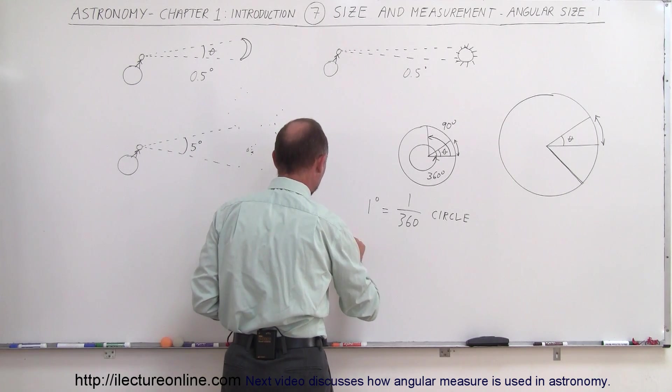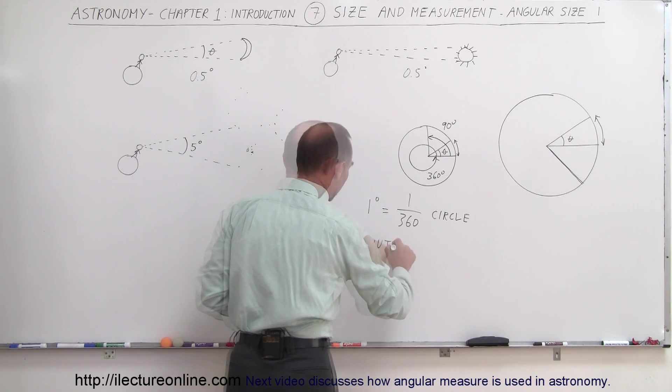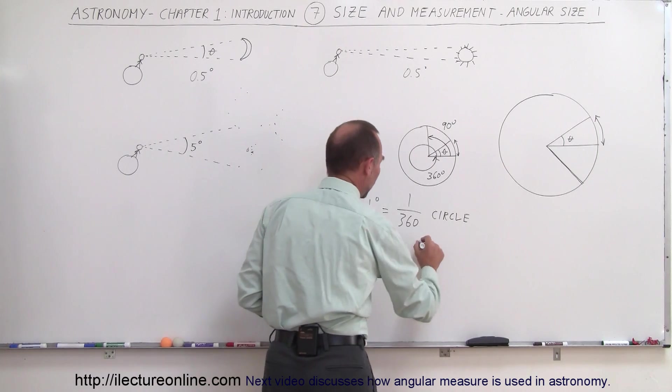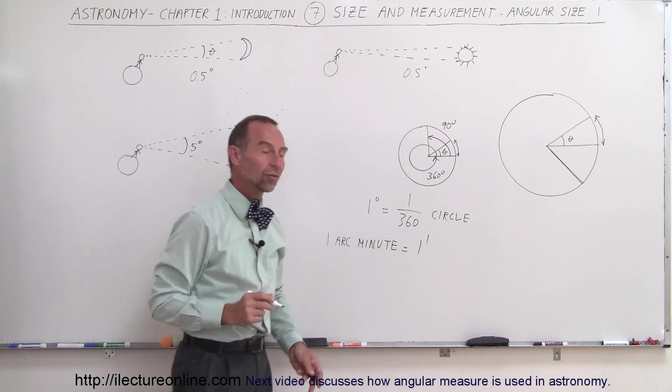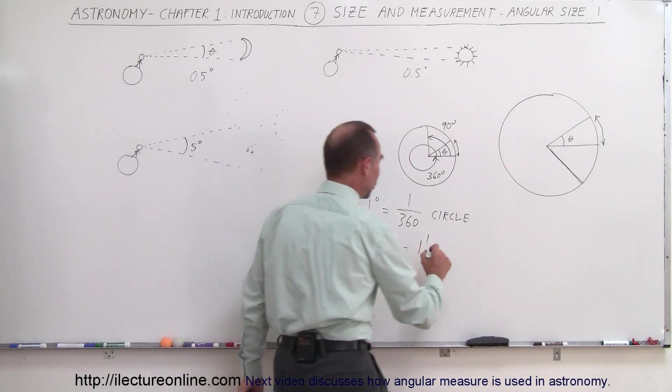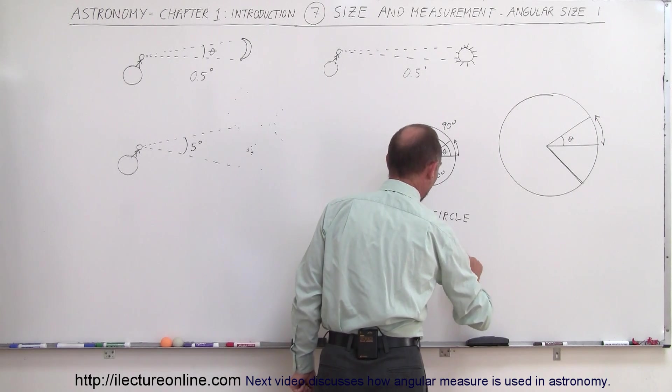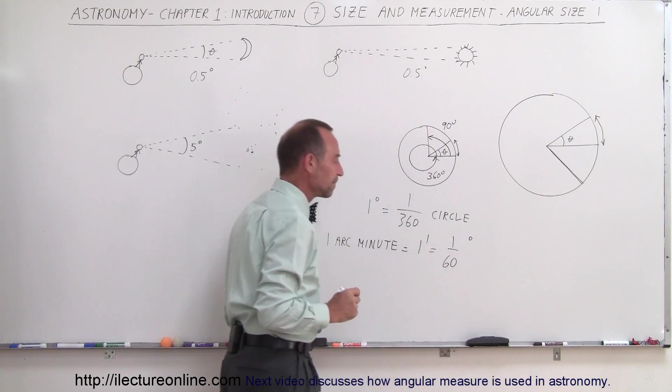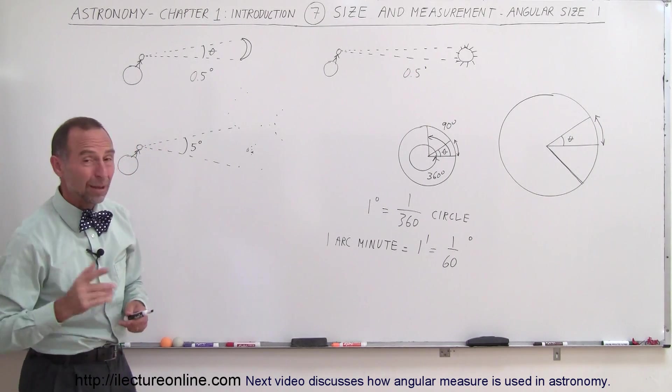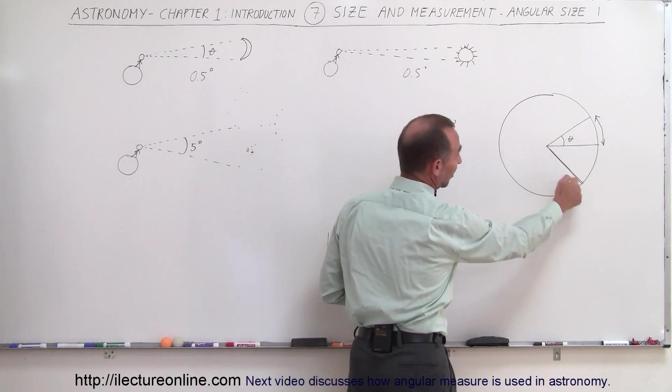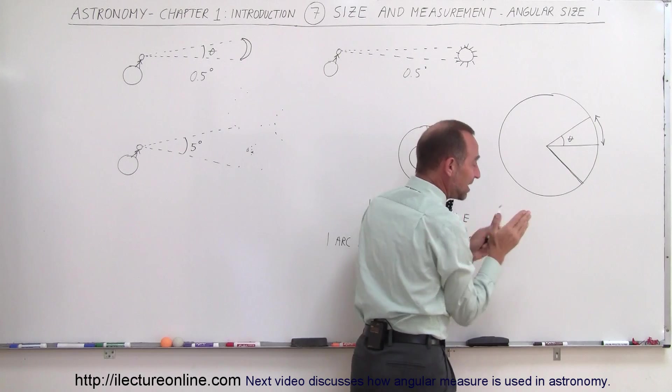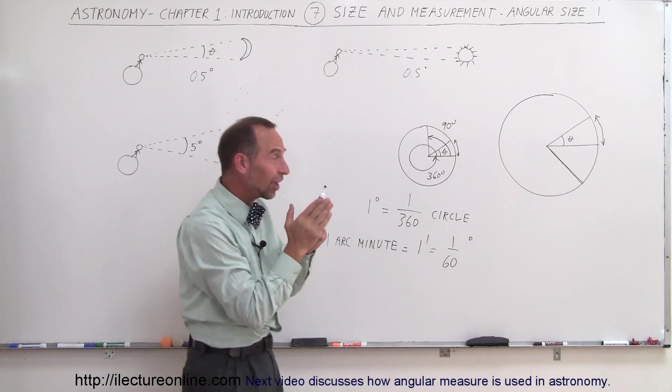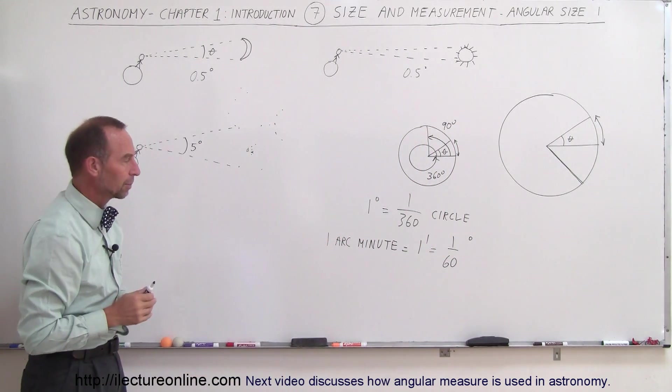We have smaller angular sizes. For example, we have what we call one arc minute, which is equal to one with a single dash, which equals 1/60th of a degree. So there are 60 arc minutes in one degree. Imagine a small angle slice and chopping it up into 60 equal angles, and each one of those tiny little slices would be one arc minute.